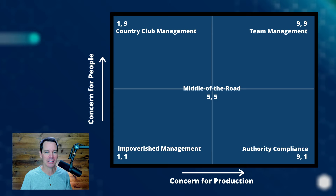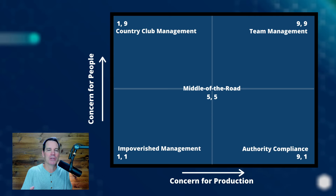Right in the middle is called the middle of the road management style. Here you show an adequate level of concern for both production and for people. Middle of the road means you're going to get middle of the road — or mediocre — results. There's not a lot to stand out here about this leader.